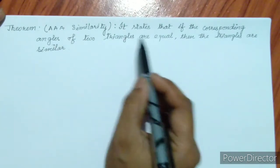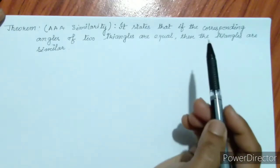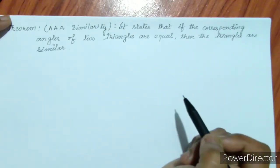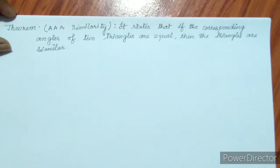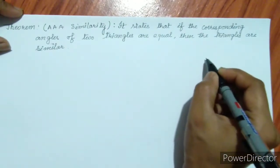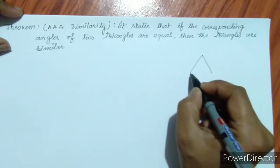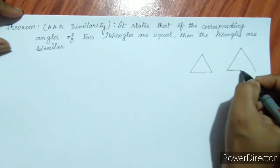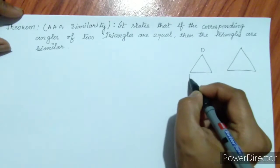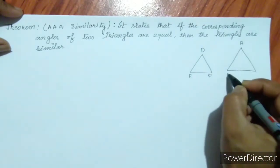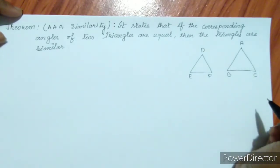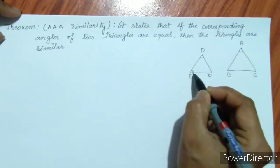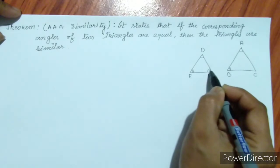Here we have triangle DEF and triangle ABC. The corresponding angles are: angle D equals angle A, angle E equals angle B, and angle F equals angle C.